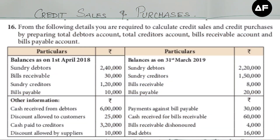In this video we are going to look into a problem which requires calculating credit sales and credit purchases from the chapter 'Accounts from Incomplete Records' Standard 12. This is the 16th problem. From the following details, you are required to calculate the credit sales and credit purchases by preparing the total debtors account, creditors account, bills receivable account, and bills payable account.